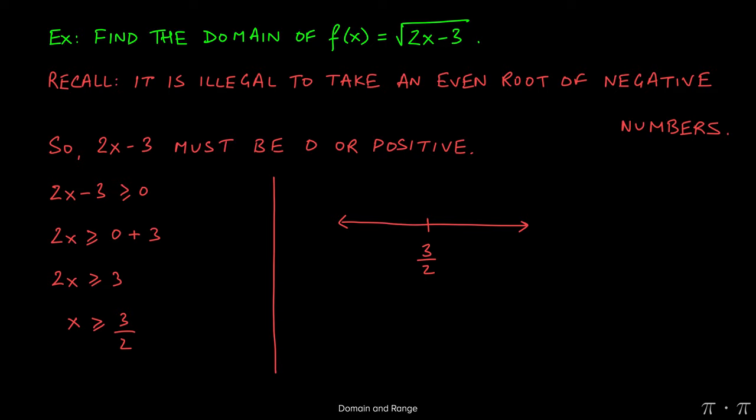If I were to plug 3 halves in here, the 2s would cancel. You would be left over with 3 minus 3, which is 0, and I can find the square root of 0. It's just the negative numbers that give me problems.